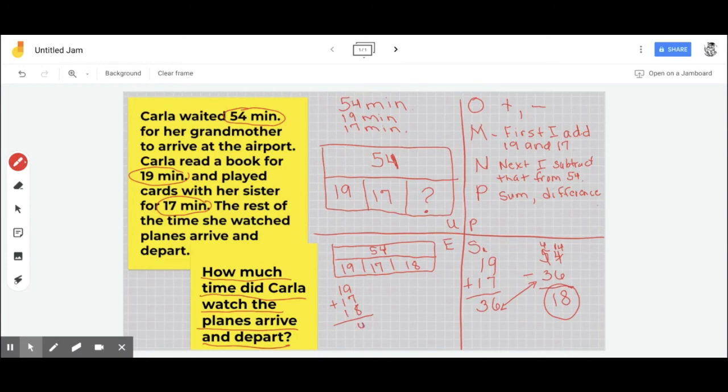So 9 and 7 and 8 equals 24. So I'm going to put my 4 right there and I'm going to regroup my 2 over here. I've got 1, 2, 3, 4, 5. Does it equal? Yes, it does.